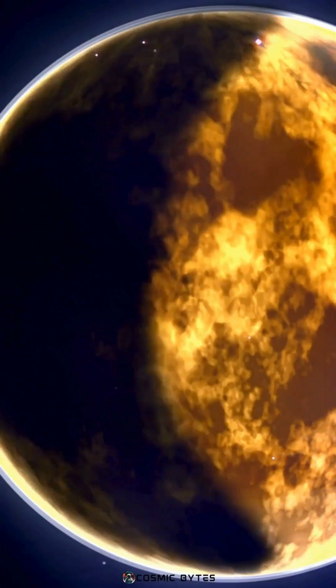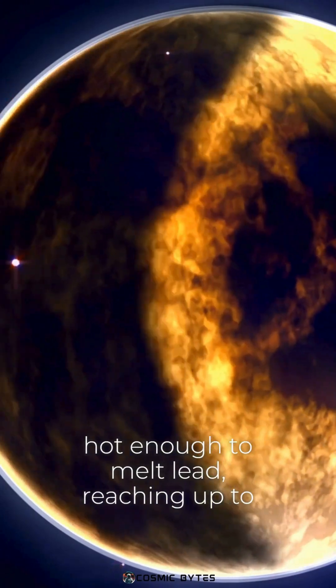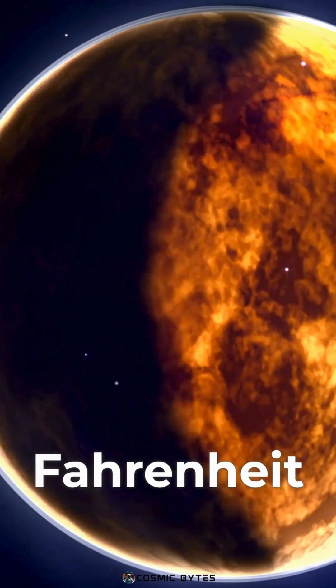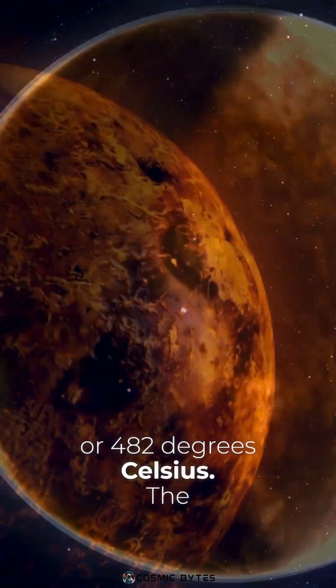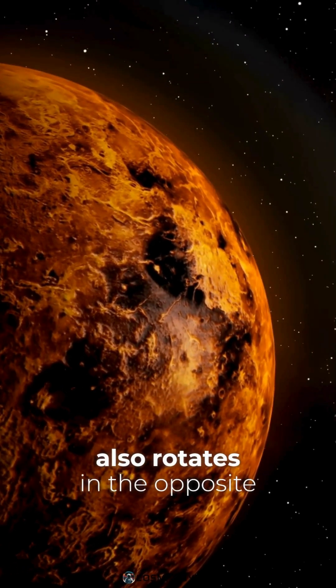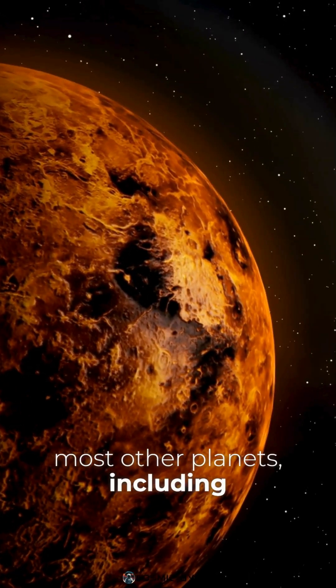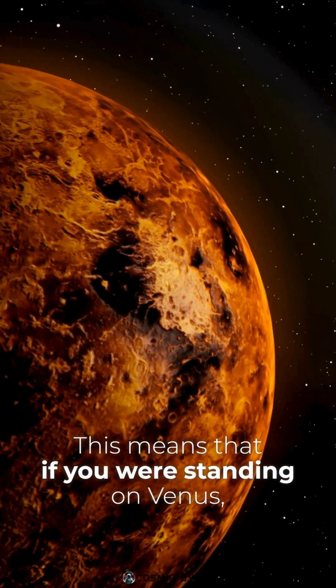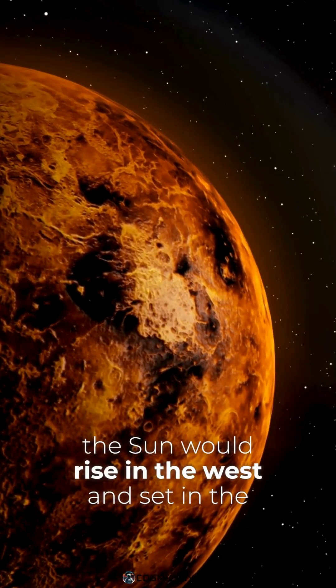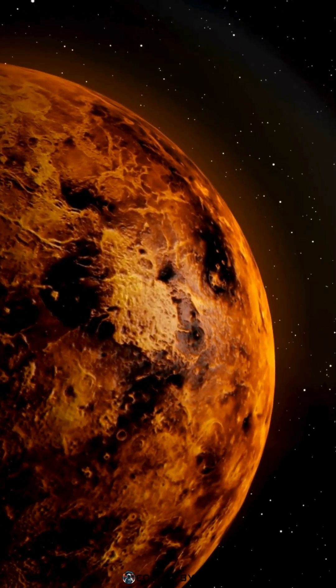The surface temperature of Venus is hot enough to melt lead, reaching up to 900 degrees Fahrenheit or 482 degrees Celsius. The planet also rotates in the opposite direction to most other planets, including Earth. This means that if you were standing on Venus, the Sun would rise in the west and set in the east.